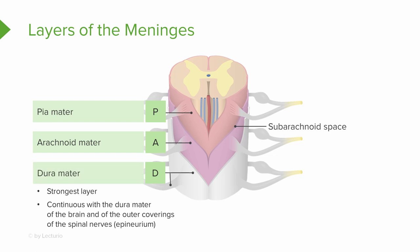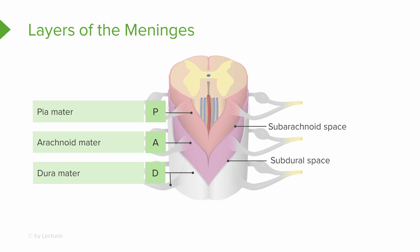The third layer is the duramater, the outermost and thickest layer of the meninges, composed of dense irregular connective tissue. It is continuous with the duramater of the brain and forms a sac that extends from the foramen magnum of the skull to the second sacral vertebrae. It is also continuous with the outer coverings of the spinal nerves, known as the epineurium. The space between the duramater and the arachnoid layer is the subdural space, which contains interstitial fluid.